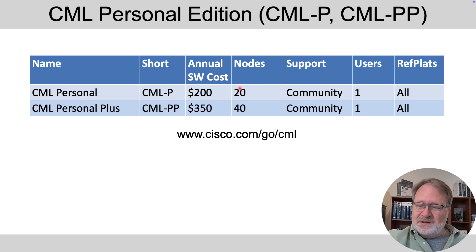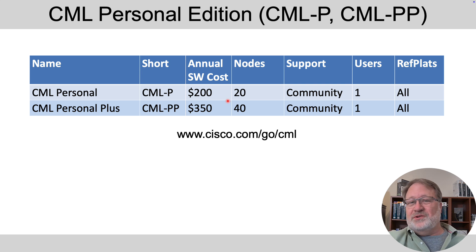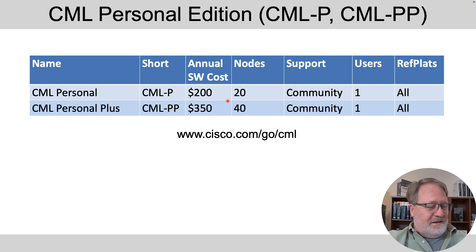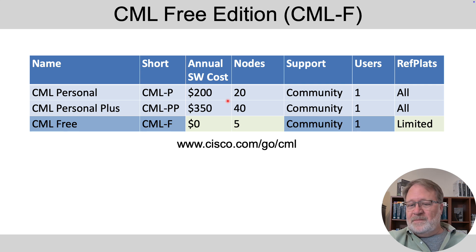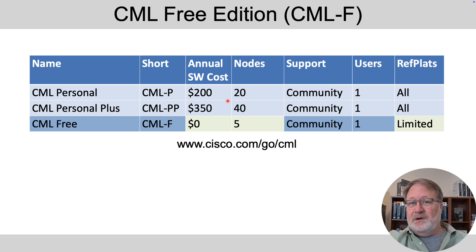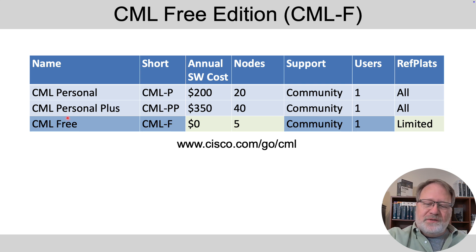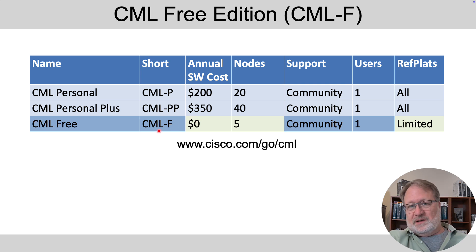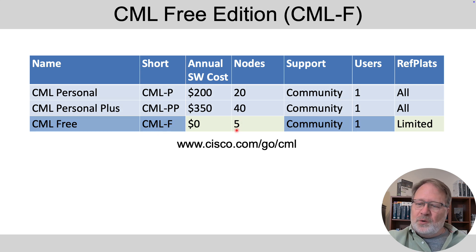Fast forward to late 2024. Cisco had made relevant modifications to CML Personal and CML Personal Plus and added this new variation called CML Free. The big news is there's no annual software cost — it's free software from Cisco. It's just fewer nodes: five concurrently running nodes. You can design all the labs you care to — you could have 100 labs designed — but you can only run five nodes at a time.